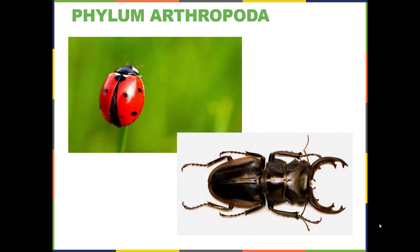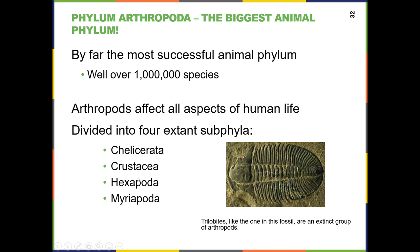This lecture segment will cover the largest animal phylum, which is phylum Arthropoda. It includes a lot of beetles, two of which are shown here, and other organisms also fall into Arthropoda. There are more than a million species of arthropods, and arthropods affect all aspects of human life, especially insects.